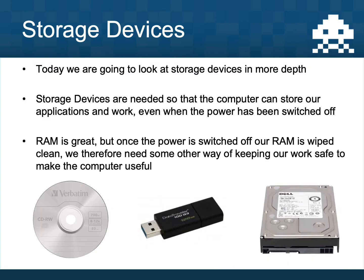We need storage devices so that we can save our work and our applications. Our computer wouldn't be helpful if we had to start from scratch every time we switched it on. RAM is great but once the power is off the RAM is wiped, so we need storage devices. Examples include a CD, a USB pen drive, and a hard drive — and we're going to look at each of those today.